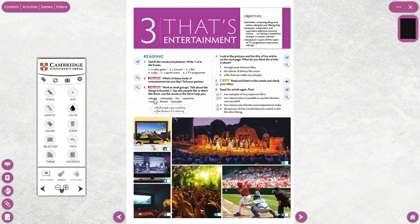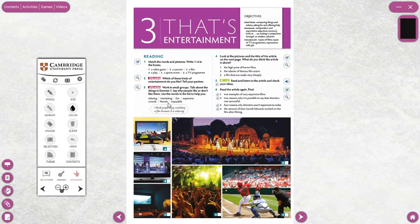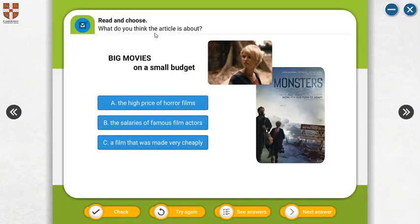You can say which one you want or which one is your favorite entertainment. Now: relaxing — what does relaxing mean? Relaxing means when you rest. Also: interesting, fun, expensive, enjoyable. Look at here — what do you think the article is about? Big Movies on a Small Budget. Budget means money.